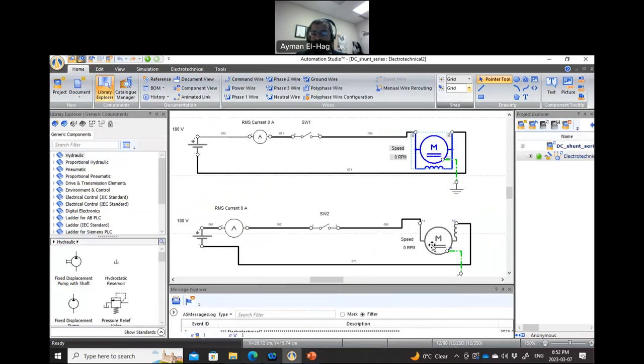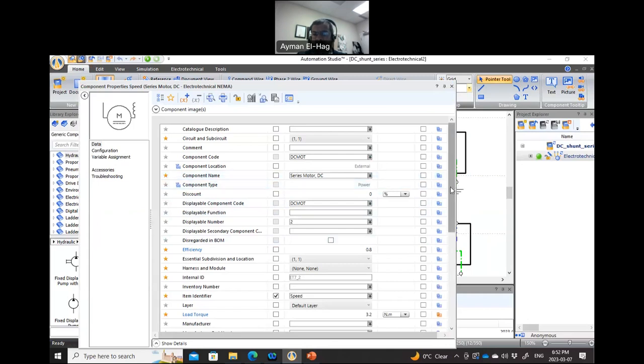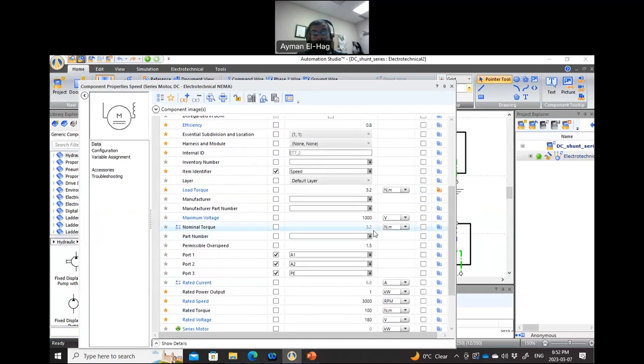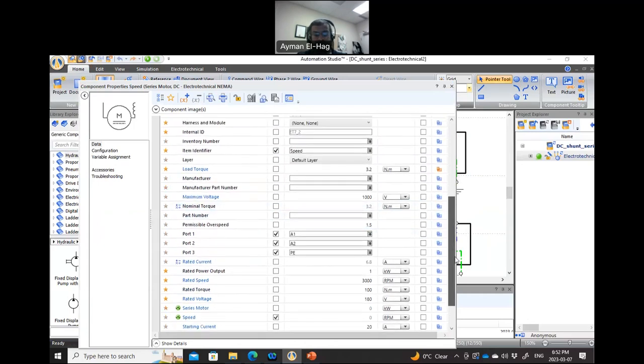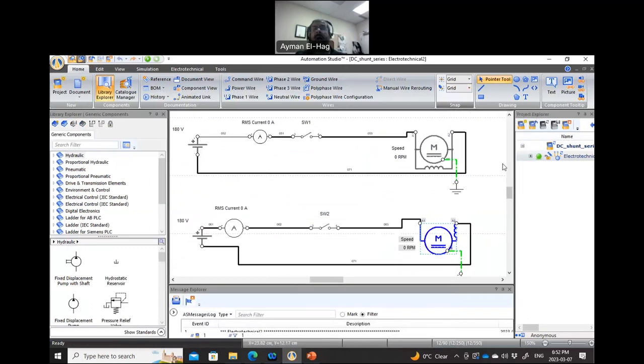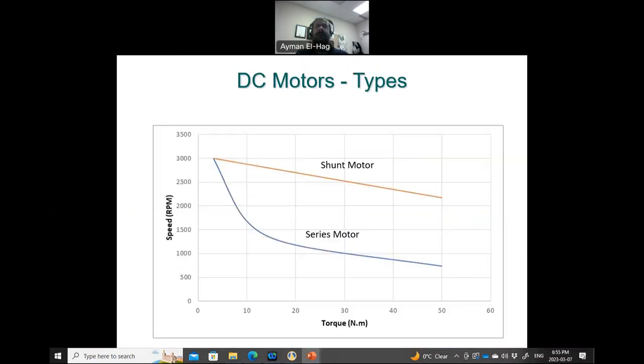Now, if you come here and click on the other motor, it's a series motor as well. If you scroll down here, the nominal torque is 3.2, so the same nominal torque, the same rated current, RPM, rated torque, and voltage. So these two motors, except for the connection, they are basically identical motors. So now let's turn on the simulation package and I will turn on the switch of both machines.